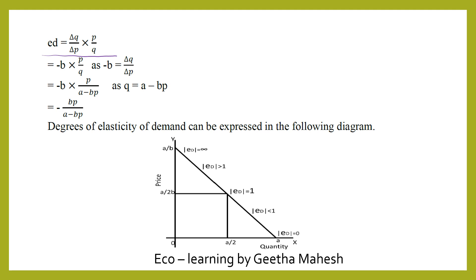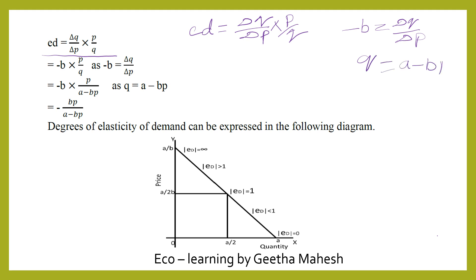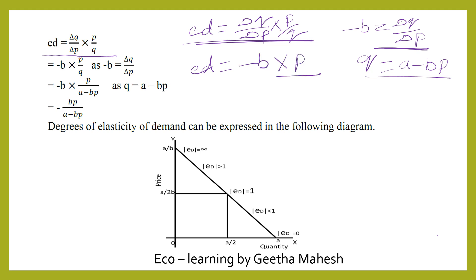We know the elasticity of demand equation: elasticity equals delta Q divided by delta P, into P divided by Q. Now we substitute the slope of the demand curve, minus B, in place of delta Q divided by delta P, and substitute the linear equation Q equals A minus BP in place of Q. So elasticity of demand equals minus B into P divided by A minus BP.